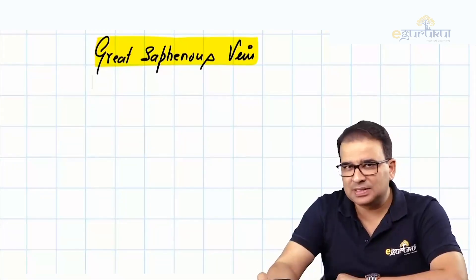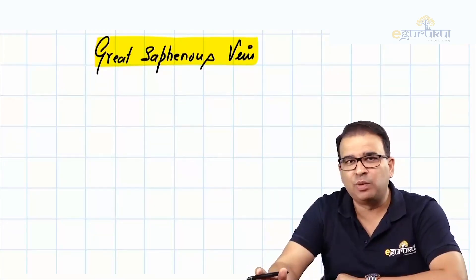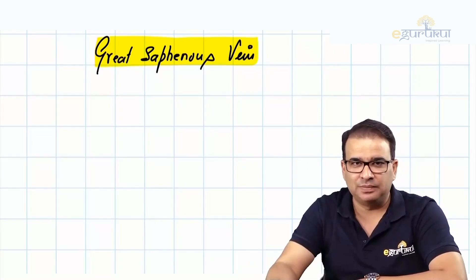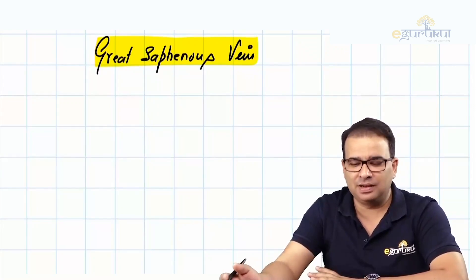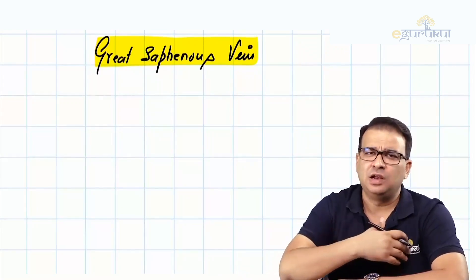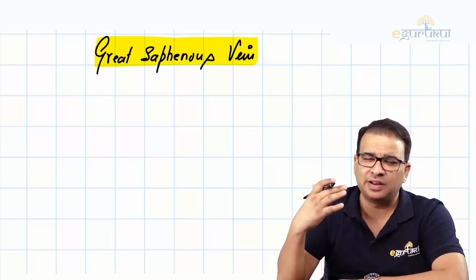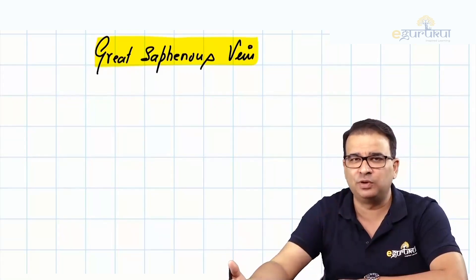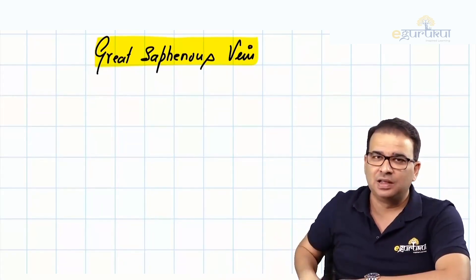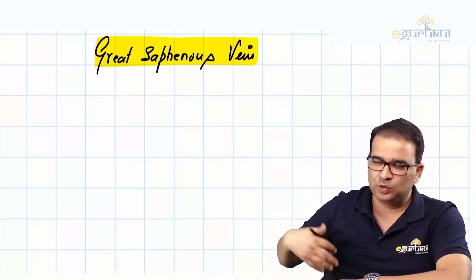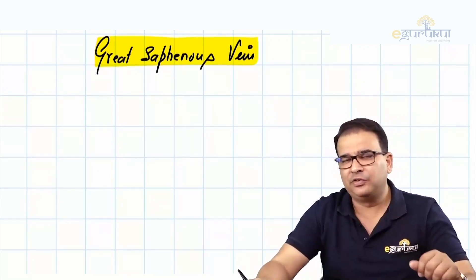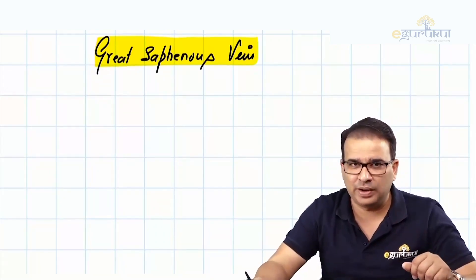Let's talk about the longest vein in the human body — the great saphenous vein. The name is great and the course is also great. It's a long vein starting from the dorsum of the foot and ultimately seen in the femoral triangle, going through the cribriform fascia and draining into the femoral vein.